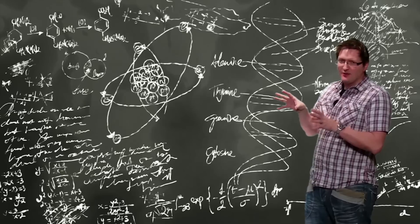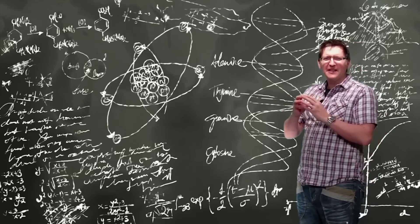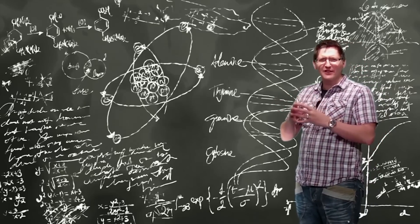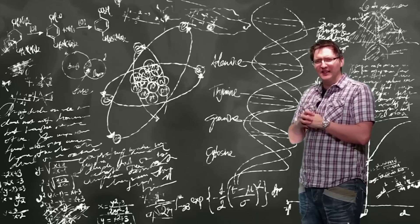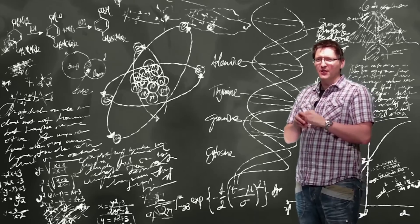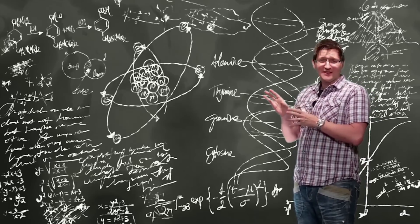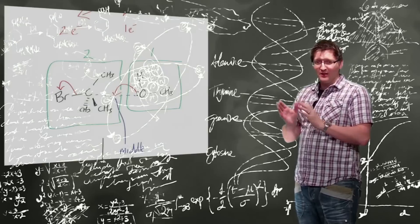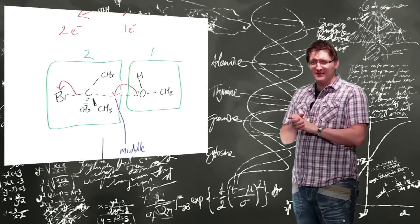Now if you remember, I mentioned the beginning of the arrow indicates an electron rich species and the end of the arrow indicates an electron deficient species. If you notice in the last example, it wasn't actually an electron deficient species.